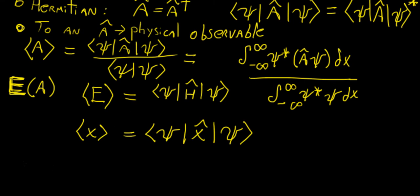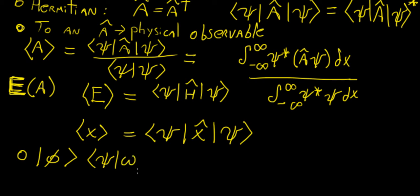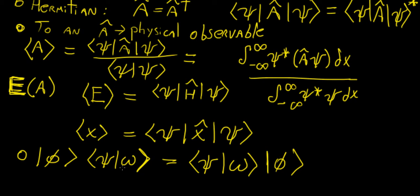Another property worth noting: if you have the inner product of two functions, this is the same as the inner product times that eigenfunction or wave function, because the inner product of two wave functions is just a scalar quantity. It can be a complex number, but it is still a scalar, so it doesn't matter whether we put it at the front or at the back. This property holds.